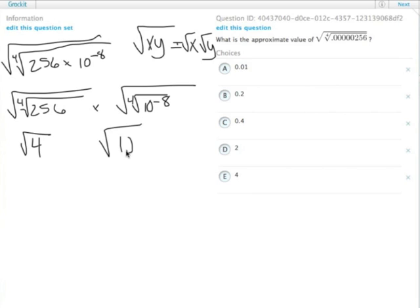That's actually 10 to the negative 2, because negative 2 times 4 is negative 8, so we just divide. These two are still times each other. Square root of 4 equals 2,